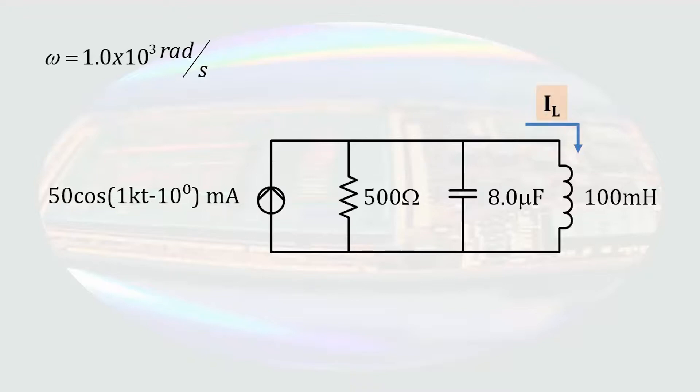The time-dependent current, Il of t, can be written in phasor form as Il. The source is converted to the phasor domain by writing its magnitude, e to the j times the phase angle. So we have 50e to the minus j 10 degrees milliamps. A resistance does not change when converting to the phasor domain.